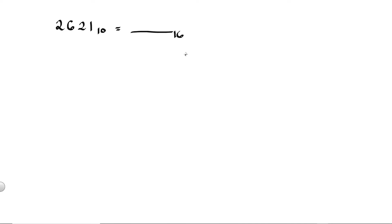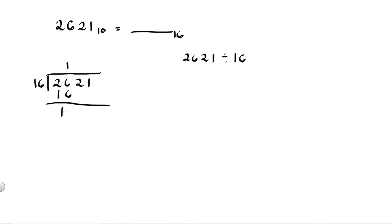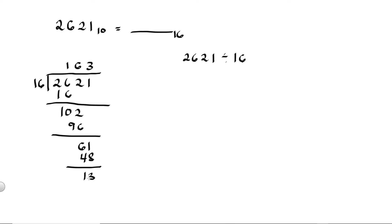Let's convert 2621 decimal into hex. We're going to divide 2621 by 16 using the long division method. 26 divided by 16 is equal to 1. 1 times 16 is 16. 26 minus 16 is 10. Bring down 2, making 102. 102 divided by 16 is equal to 6. 6 times 16 is 96. 102 minus 96 is 6. Bring down 1, so 61 divided by 16 is 3. 3 times 16 is 48. 61 minus 48 is 13.